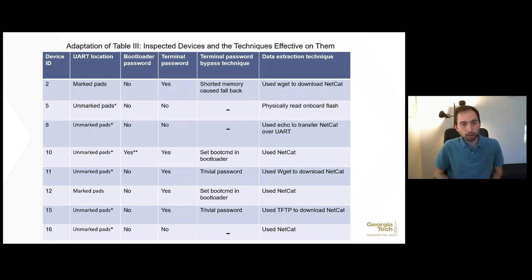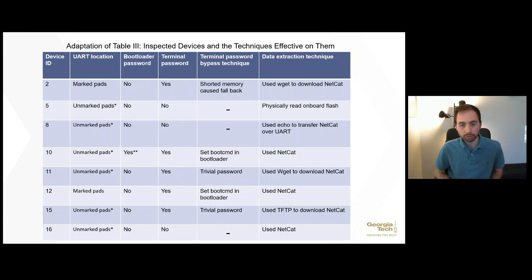Table 3 from the original paper lists all the inspected devices and the techniques effective on them. In the column to the farthest right, you can see that for data extraction techniques, nearly all techniques utilize the Netcat tool for removing the file system. If Netcat wasn't available, the researchers used WGET or TFTP to download Netcat. Only two devices had to use other methods that weren't over the network to extract the file system.